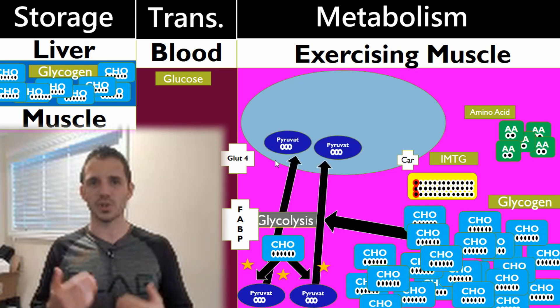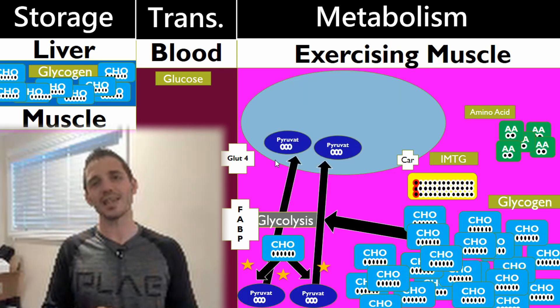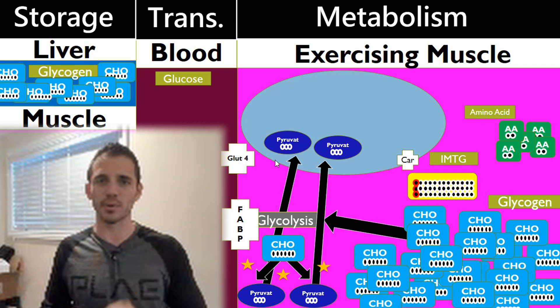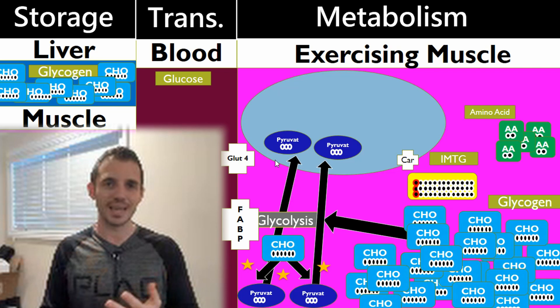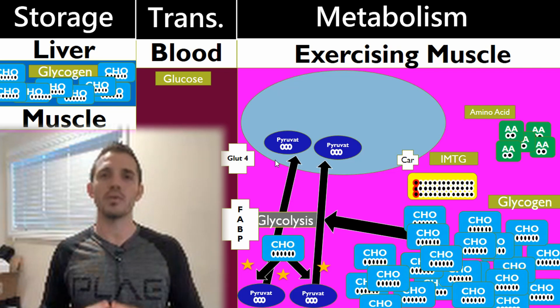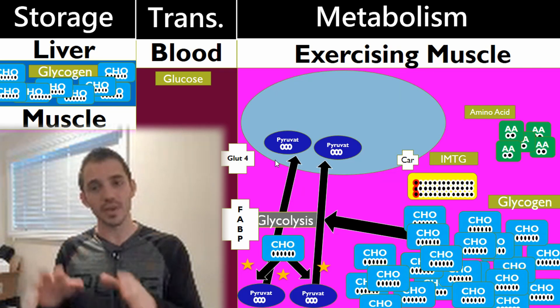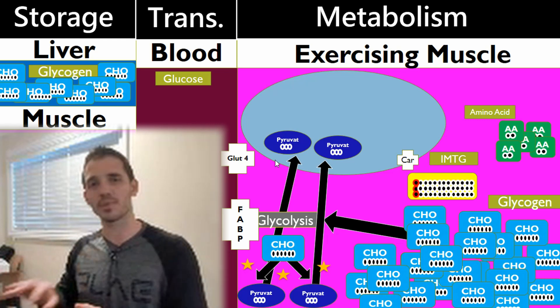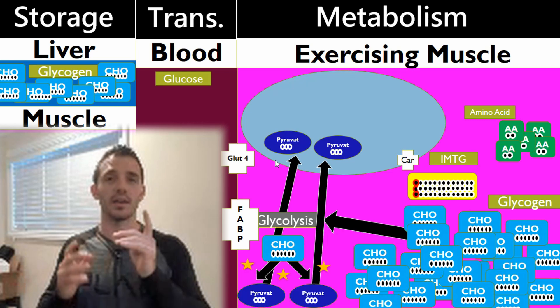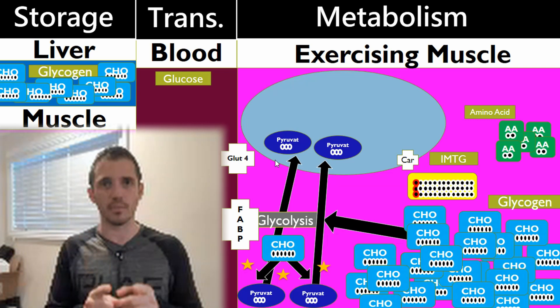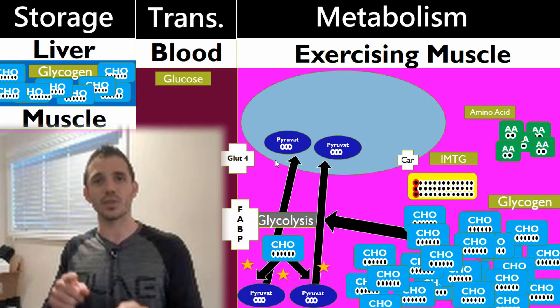If we have sufficient oxygen available in the tissue, we can take that pyruvate and ship it into the mitochondria. Anytime you hear the word aerobic or oxidative, you automatically know this is going down in the mitochondria. Glycolysis happens in the cytoplasm or cytosol outside of the mitochondria - it's anaerobic. Once we want to fully metabolize that carbohydrate molecule, we have to take it through aerobic metabolism, which means shipping it to the mitochondria.